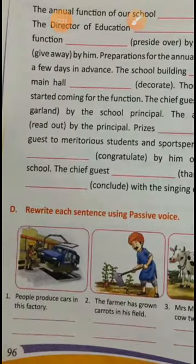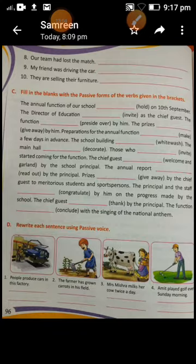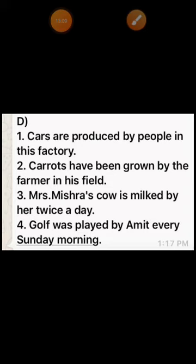Now Exercise D: rewrite each sentence using passive voice. First sentence: 'People produce cars in this factory.' The object is 'cars.' The passive is: 'Cars are produced in this factory by people' or 'Cars are produced by people in this factory.' Second sentence: 'The farmer has grown carrots in his field.' 'Carrots' is the object, so: 'Carrots have been grown by the farmer in his field.'